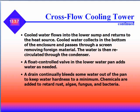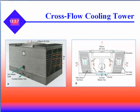A flow control valve in the lower water pan adds water as needed. A drain continuously bleeds some water out of the pan to keep water hardness to a minimum. Chemicals are added to retard dust, algae, fungus, and bacteria.